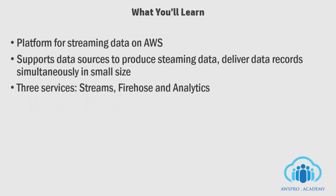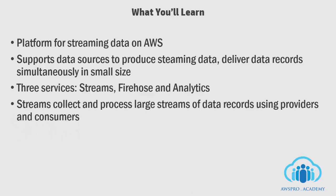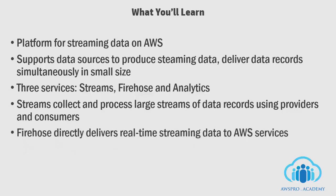The Kinesis platform supports 3 different services: Kinesis Streams, Kinesis Firehose and Kinesis Analytics. Kinesis Streams are used to collect and process large streams of data records in real time. It collects data from the providers — providers can be servers that produce logs or IoT devices that transmit data continuously — and it uses the consumer to process or read data from the streams. Kinesis Firehose is mainly used to deliver real-time streaming data to other AWS services including S3 and Redshift, delivering data to consumers directly.